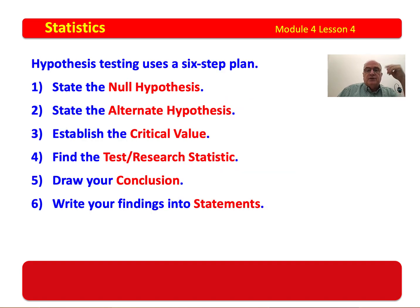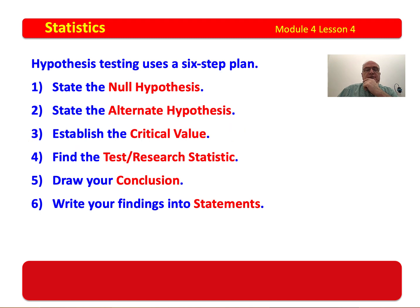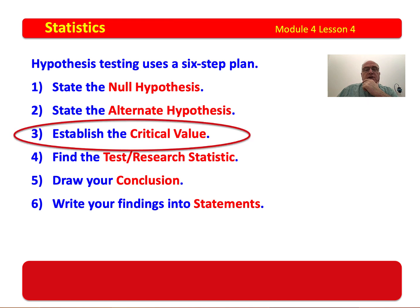You remember the six-step plan: state the null, state the alternative, establish the critical value, find the test statistic, draw your conclusion, and write your findings into statements. The only difference between a small sample and a large sample is that you have to establish the critical value using a T-score rather than your Z-critical value. That's the only difference.